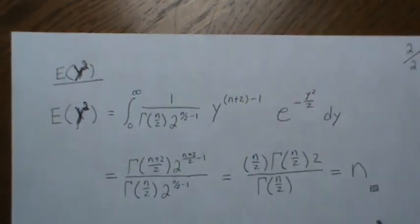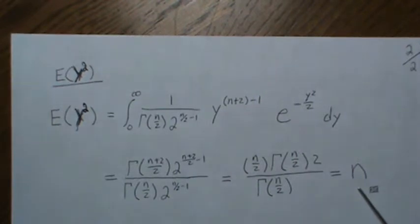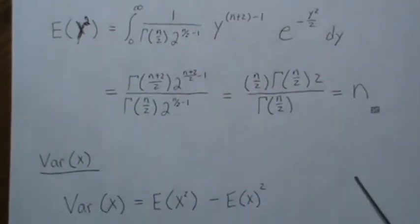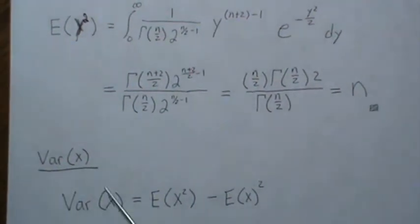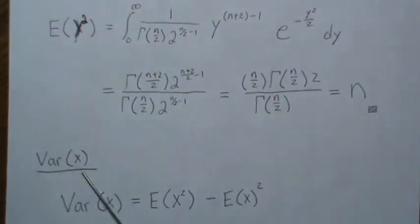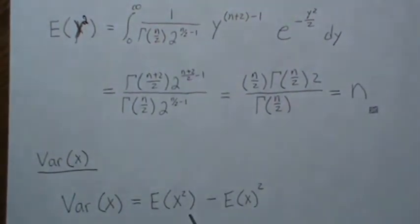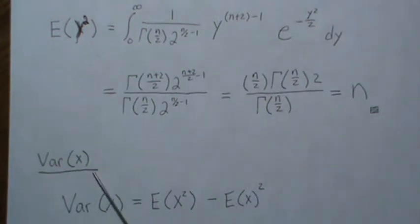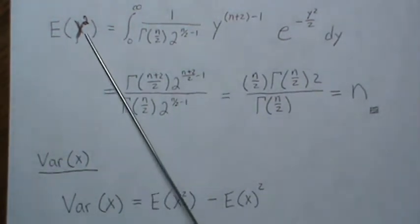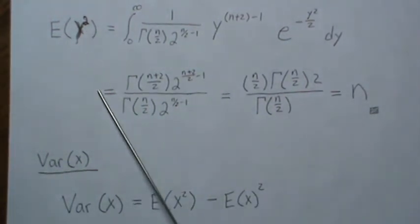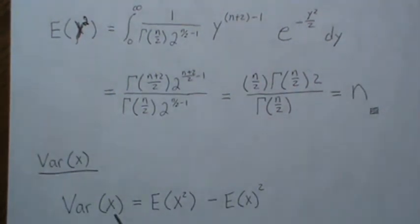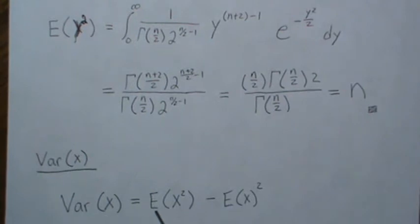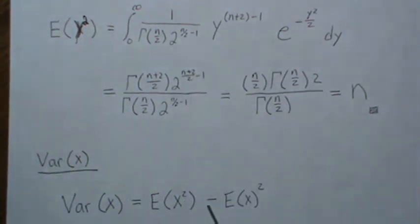So E(Y²) equals n, which makes the variance much easier. The variance is E(Y²) minus the mean squared. So the variance of our chi distribution is E(Y²) minus the mean squared.